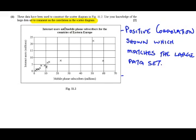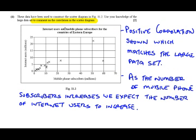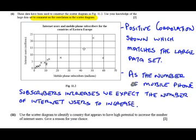Positive correlation means that as the number of mobile phone subscribers increases, we expect the number of internet users to also increase. I identified the positive correlation, linked it to the large data set, and then made a connection to the context of this particular question.